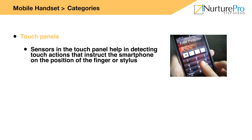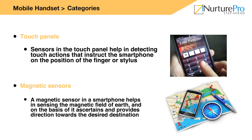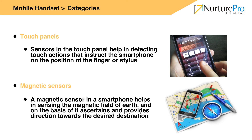Today, people mostly depend on smartphones for navigation to unknown destinations. A magnetic sensor in a smartphone helps in sensing the magnetic field of the Earth and, on the basis of it, ascertains and provides direction towards the desired destination. The magnetic sensor provides details such as change in device orientation, which is displayed on the smartphone screen. This information is needed when using the device for navigation on foot. When a magnetic sensor is not used, the position of the user is displayed on the map but the orientation is not displayed using the direction pointer. Magnetic sensor helps in taking the right step in the right direction, though it is not a mandatory component.